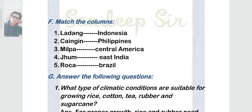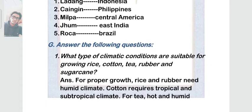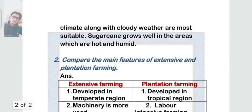Question 1 asks: what type of climatic conditions are suitable for growing rice, cotton, tea, rubber, and sugarcane? For proper growth: rice and rubber need a humid climate; cotton requires tropical and subtropical climate; for tea, hot and humid climate along with cloudy weather is most suitable; and sugarcane grows well in areas which are hot and humid.